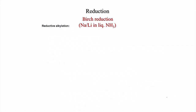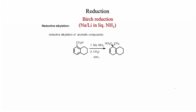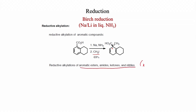Reductive alkylation is possible. Aromatic compounds such as benzoic acid derivatives treated with sodium in liquid ammonia and then iodomethane give a cyclohexadiene system with a quaternary stereogenic center bearing both the carboxylic acid and methyl groups at the same carbon. Reductive alkylation is possible with aromatic esters, amides, ketones, and nitriles — all electron-withdrawing groups — because only then is the anion stabilized and alkylation enabled.